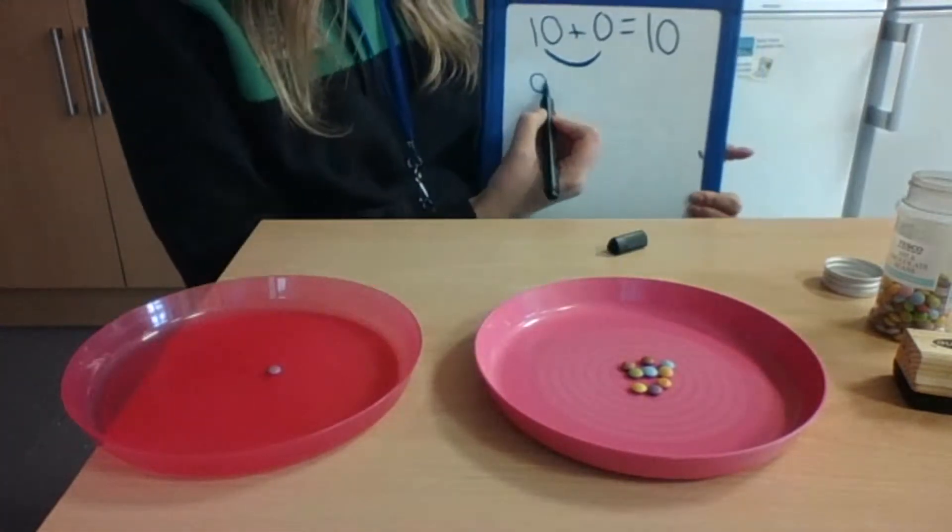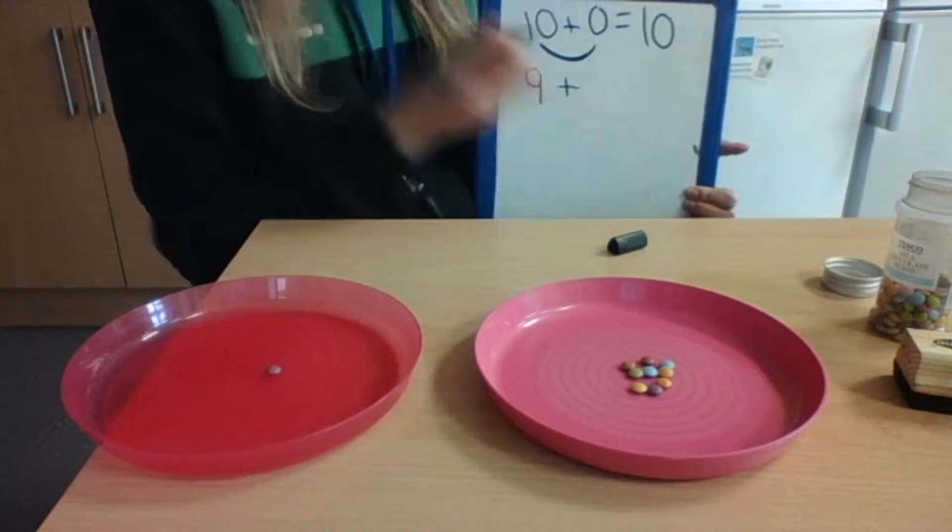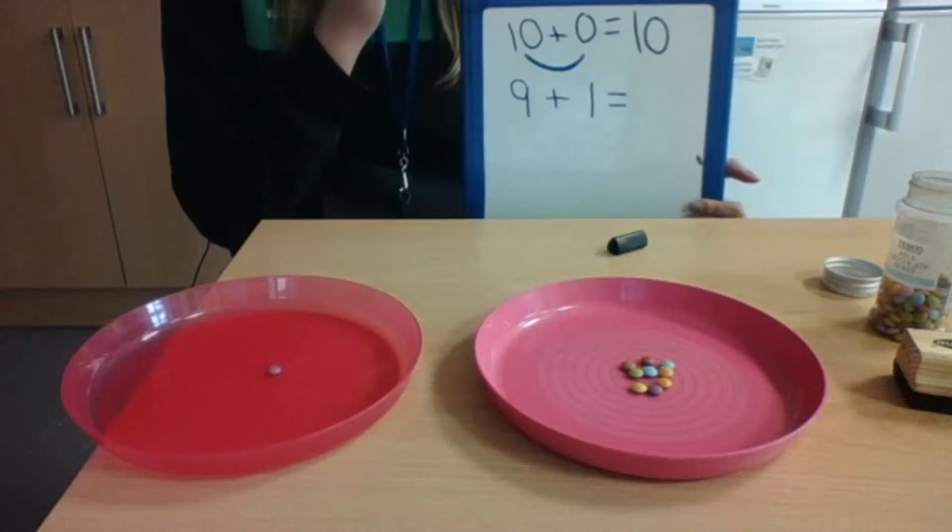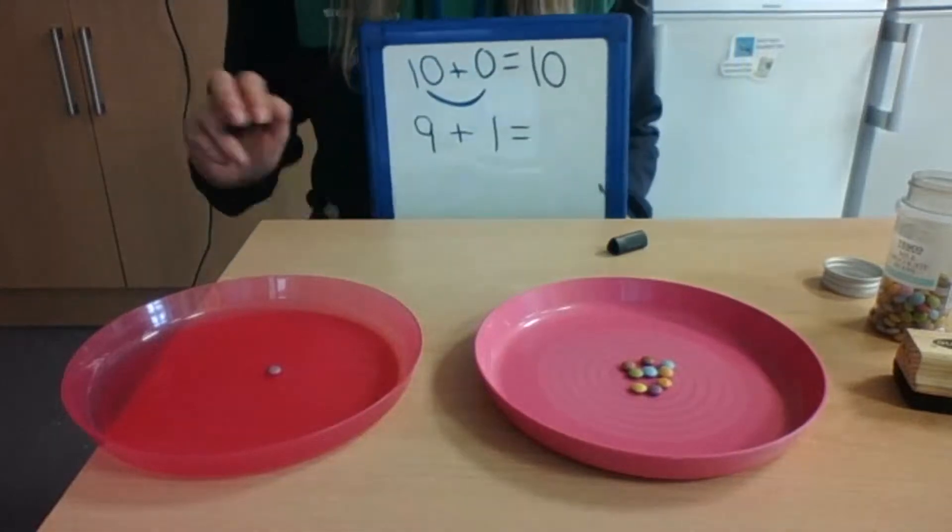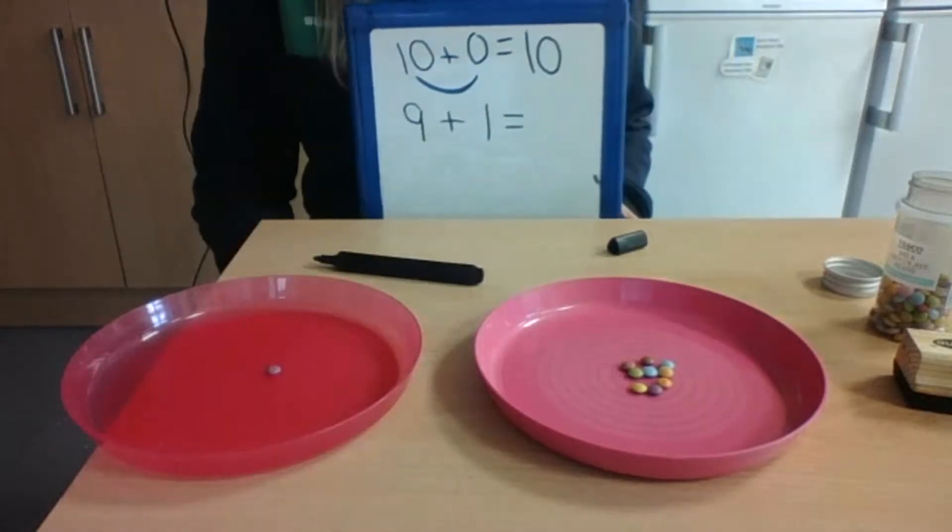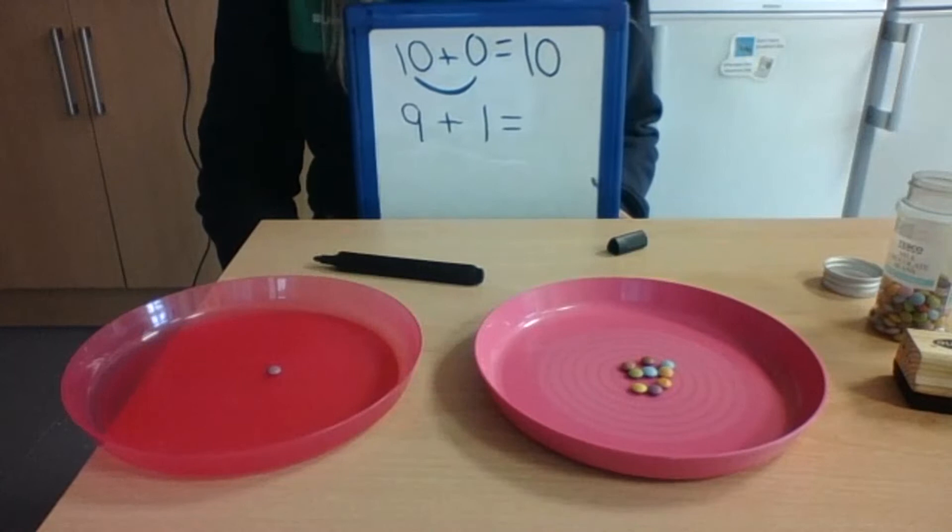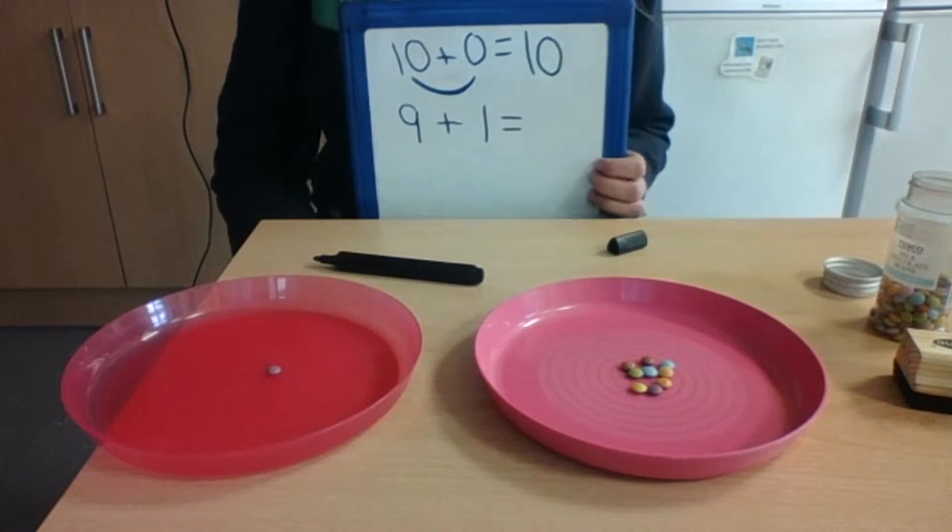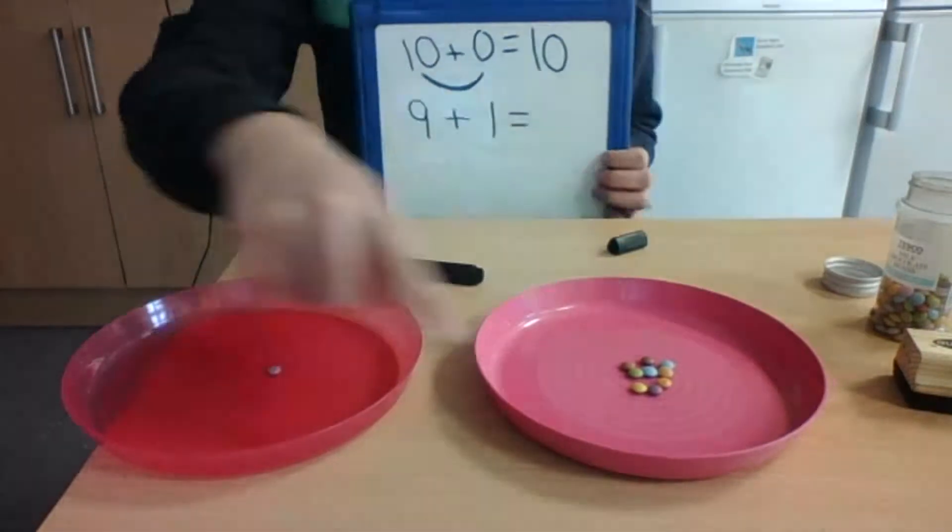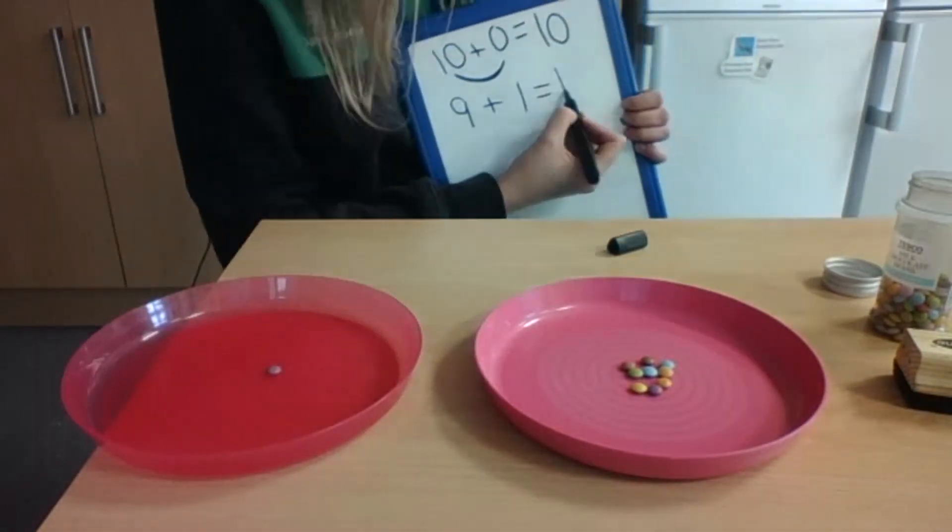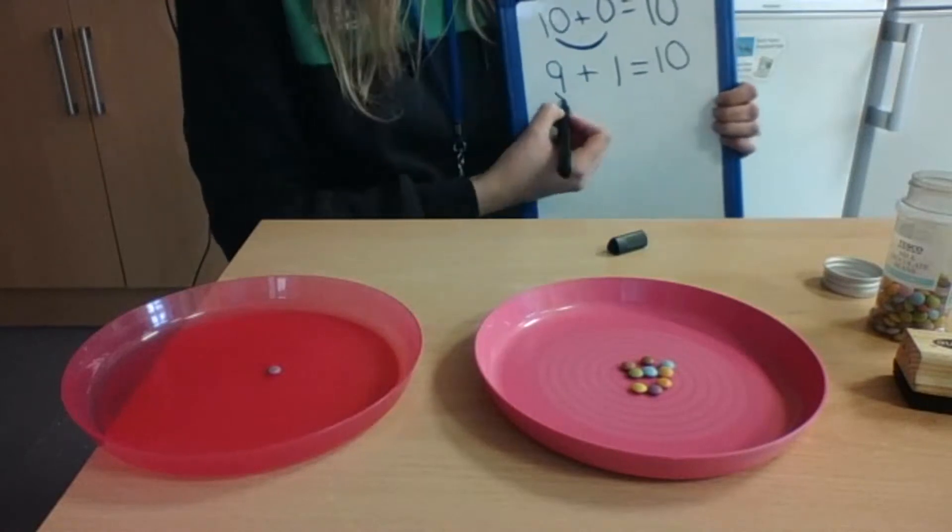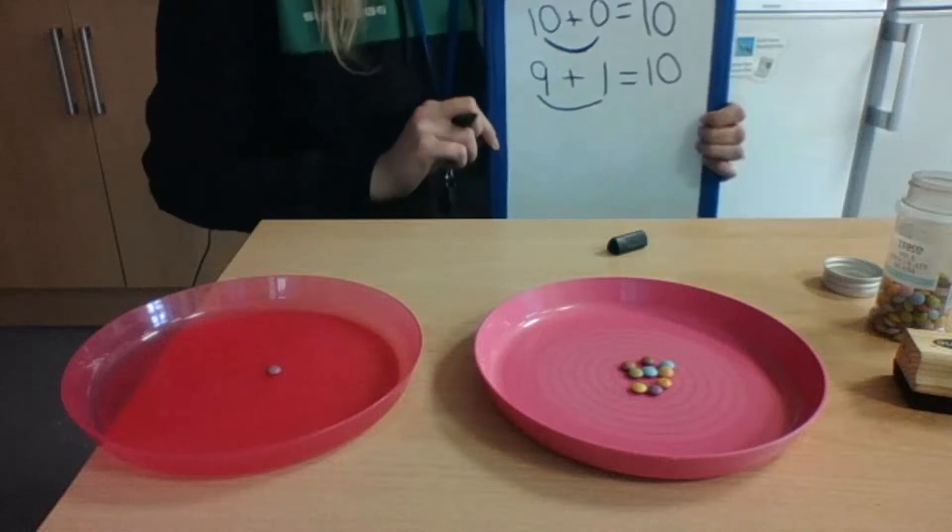So that means that 9 add how many? 1 equals, hmm. I think I know how many that equals because I know how many I had to start with. How many smarties did we have all together? If you said 10, you're right. We had 10 which means that 9 add 1 equals 10 because there are 10 all together. So that's another one of our number bonds. 9 add 1 are the two parts that make number 10.